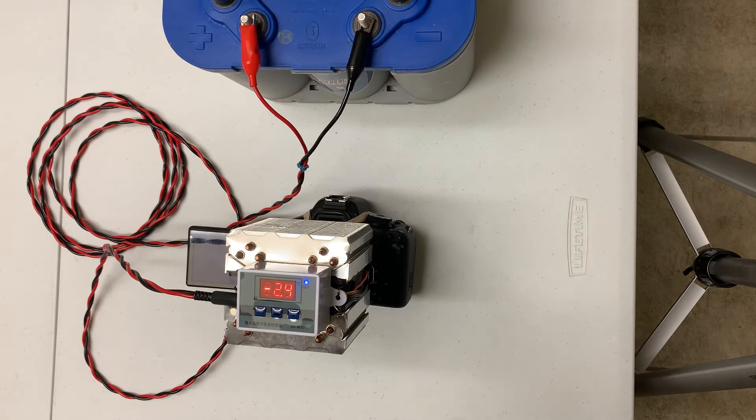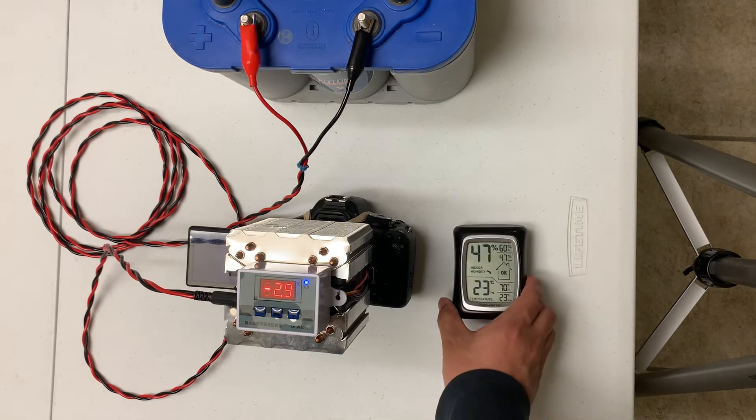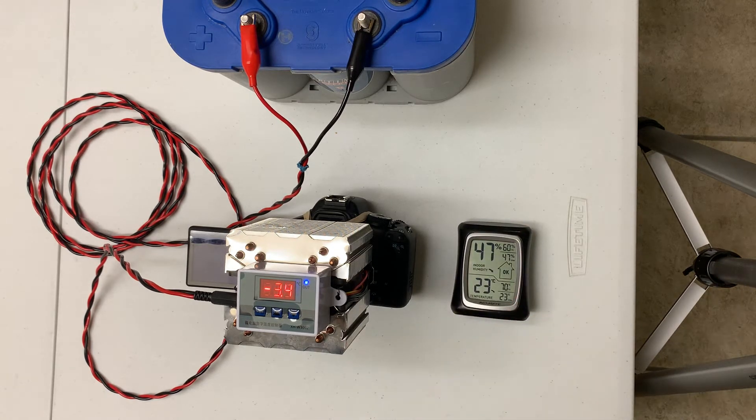So as you see here, the ambient temperature is 23 Celsius, and now the temperature of the cooling plate is at minus 5.5. It's getting close to minus 6, it keeps dropping.